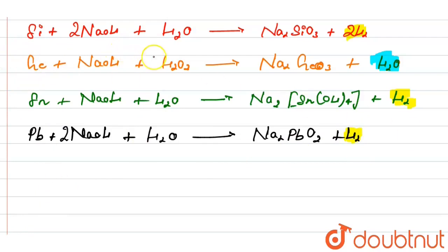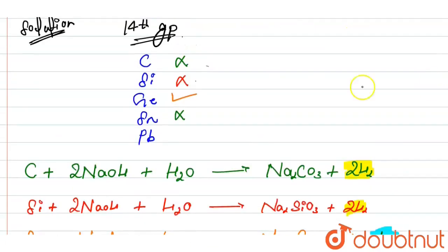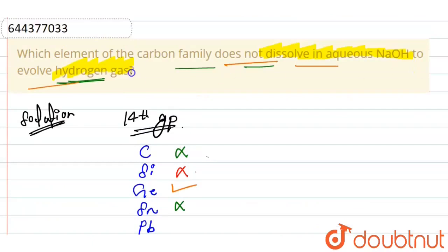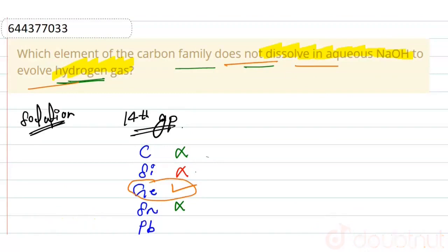Our final answer is germanium, because germanium does not give H₂ gas when reacted with aqueous NaOH. It does not evolve hydrogen gas, so germanium is our answer. Thank you.